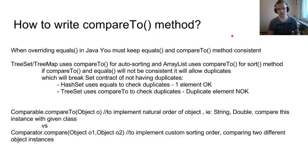How to write the compareTo method? When overriding equals in Java, you must keep equals and compareTo methods consistent. Why? Because the TreeSet and TreeMap use this compareTo method for sorting, and ArrayList uses this compareTo for the sort method. So if compareTo and equals are not consistent with each other, it will provide you the duplicates, which will break set contract of not having the duplicates.